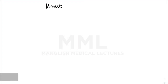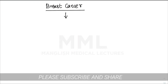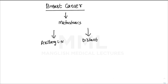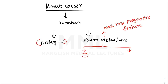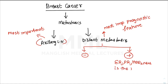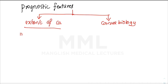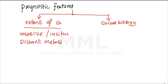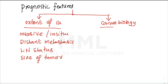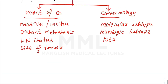Regarding prognostic factors: invasive breast cancer can metastasize to axillary lymph nodes or distant sites. Distant metastasis is the most important prognostic factor overall. If no distant metastasis, then axillary lymph node status is the most important factor. If distant metastasis is present, ER/PR positivity becomes the most important prognostic factor. Broadly, prognostic factors are based on extent of carcinoma (invasiveness, lymph node status, tumor size) and cancer biology (molecular subtype, histologic subtype, proliferation rate by KI67).